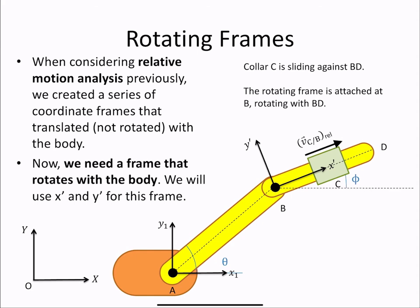Previously, when we were considering relative motion, we created a series of coordinate frames that translated but did not rotate with each rigid body. Now we need a frame that rotates with the body. We will designate this x prime and y prime.